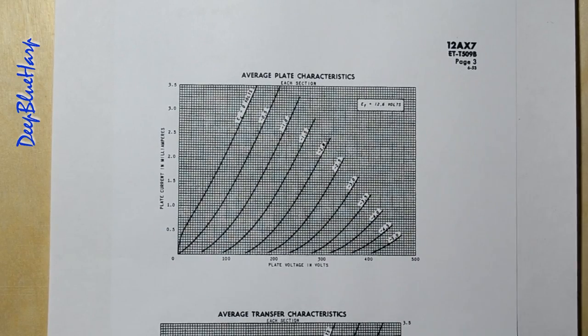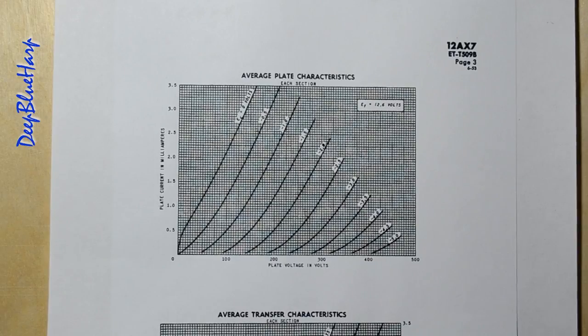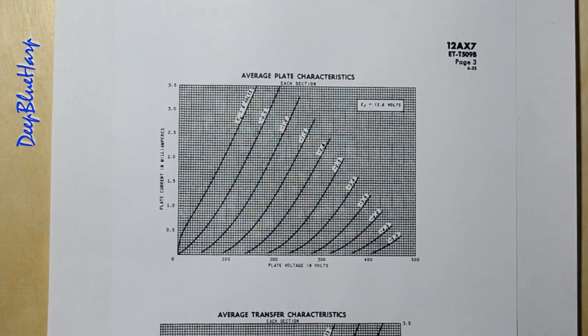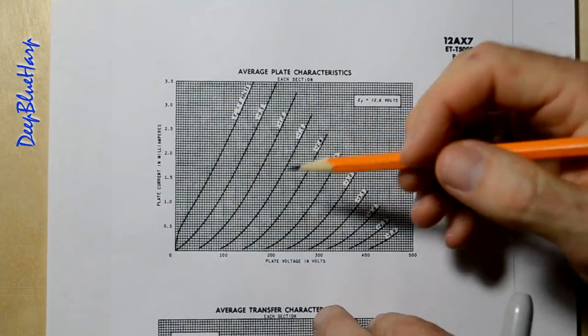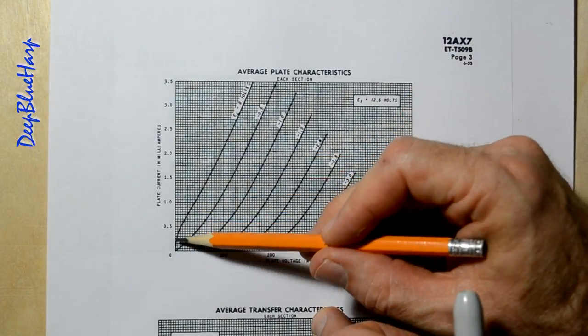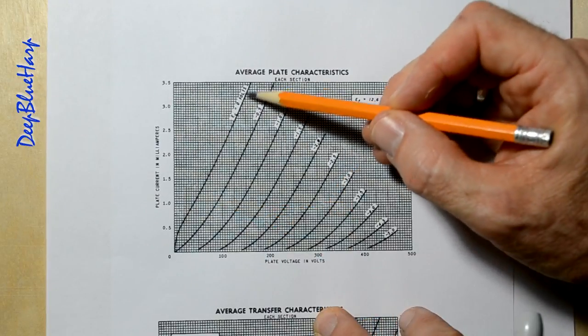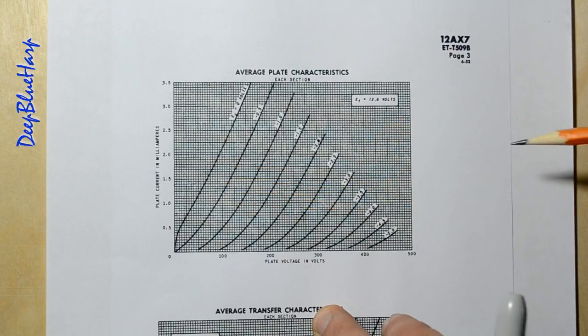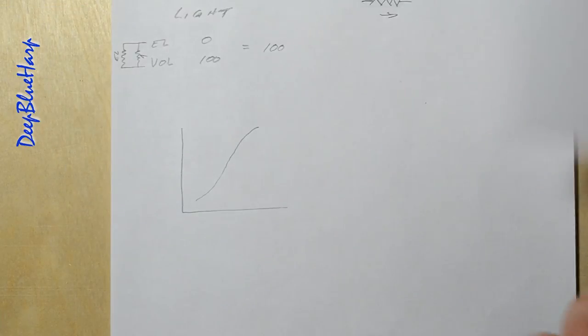Let me illustrate why we need a white cathode follower. Again, it's all about reducing or helping the power supply rejection ratio on a tube curve. They are curves. There's a lot of pronounced curve here. There's some pronounced curve up here and in the middle it is not linear. It is not straight.